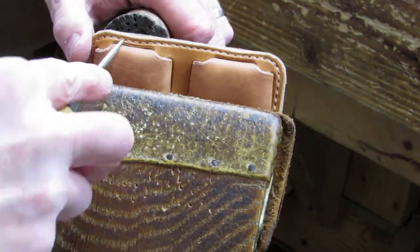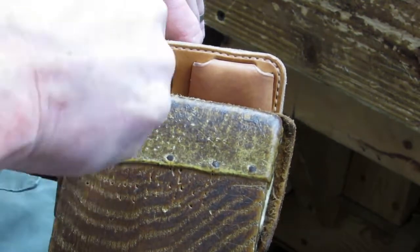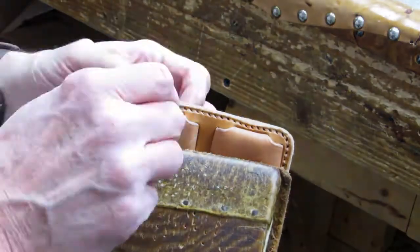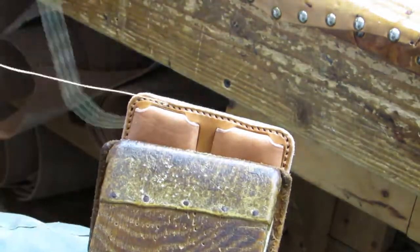Once the panels are cemented together, place the assembly in the stitching horse and punch the stitching holes. Then sew that baby up.